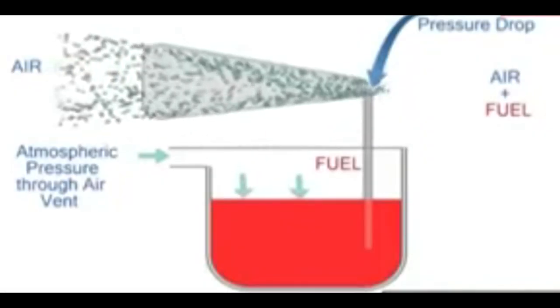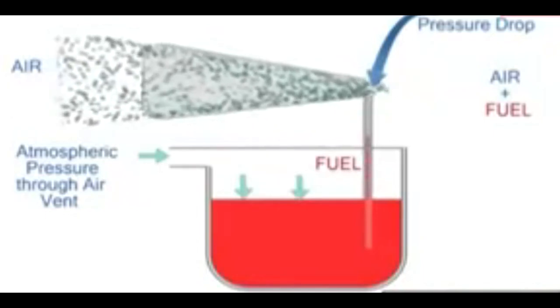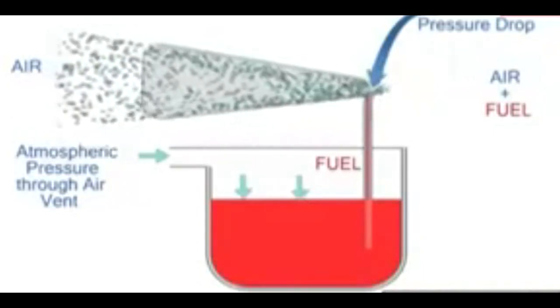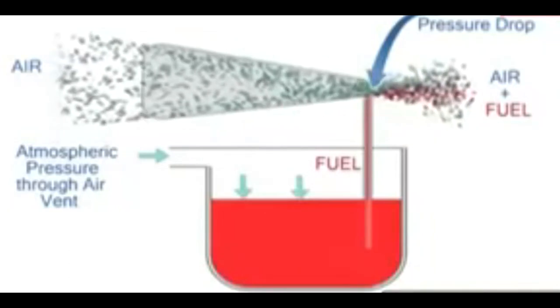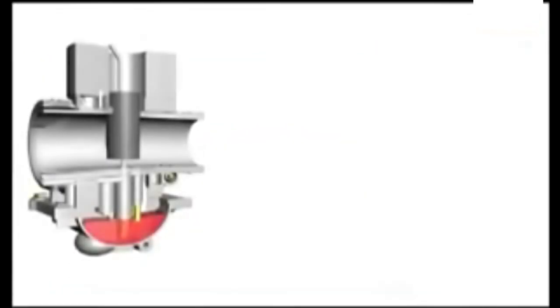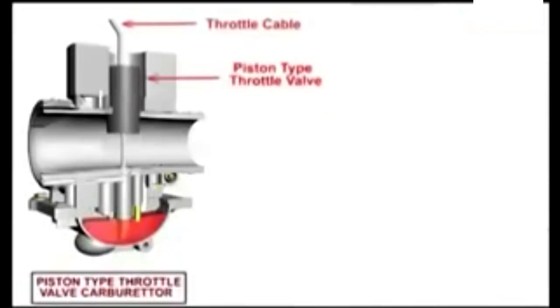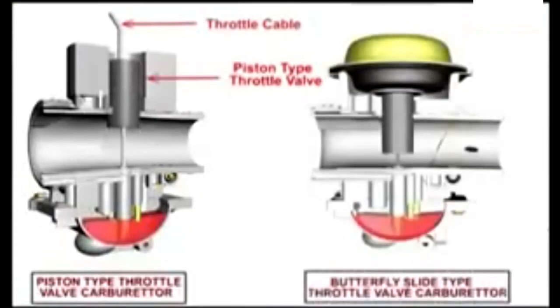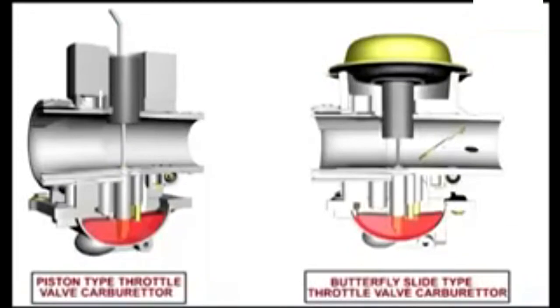In the last video we looked at the operation of a very basic carburetor. In this video we're going to look at the two types of carburetors: the piston type or round slide type, and the butterfly slide — also known as a CV or constant velocity type carburetor.